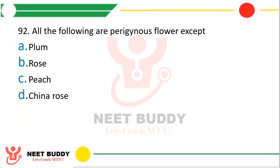Question number 92: All of the following are perigynous flowers except — Option A: Plum. Option B: Rose. Option C: Peach. Option D: China rose. Which of these four flowers is not perigynous? The correct answer is option D, china rose.